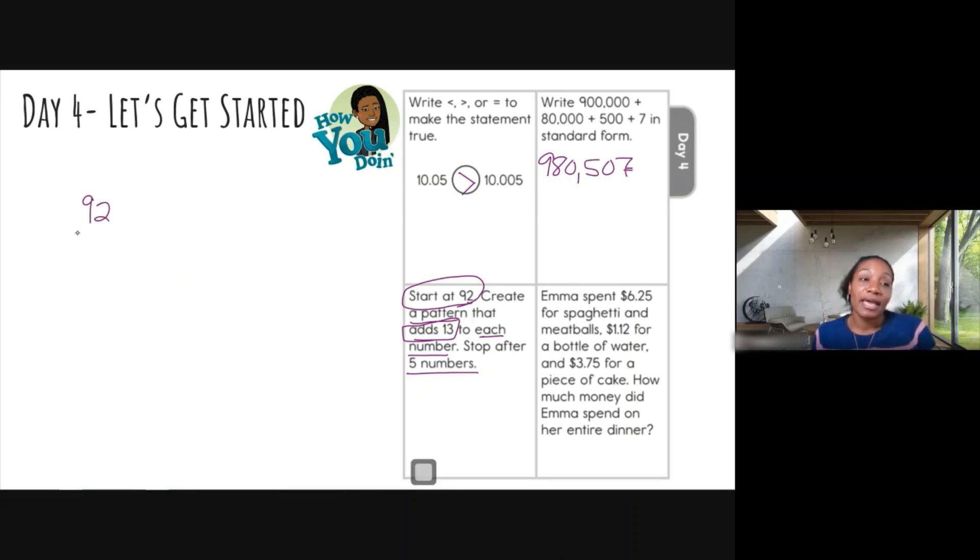It says to start at 92. Create a pattern. It says add 13. To each number, we're going to stop after five numbers. So this would be like my number one. You can create a table, you can do it however you want, you can create a number line and skip count, whatever you want to do. I'm just going to do it this way because I'm a visual person and I like to see everything lined up. So here's my first number, 92. My second number is going to be here because I just added 13. So two plus three is five. Nine plus one is 10. You can carry the one, but you're going to just bring it right back down. My second number is 105.